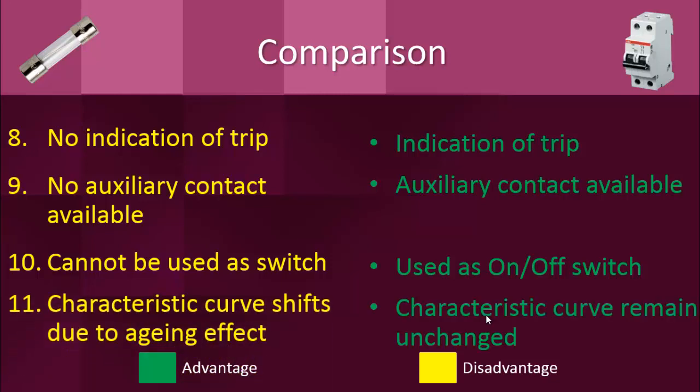The last difference is that because of the bimetallic strip, the characteristic curves — a graph between time and current — shift due to the aging effect of the bimetallic strip. No such aging effect is seen in the case of a circuit breaker. So this is all for this video — keep watching and don't forget to subscribe to our channel. Thank you.